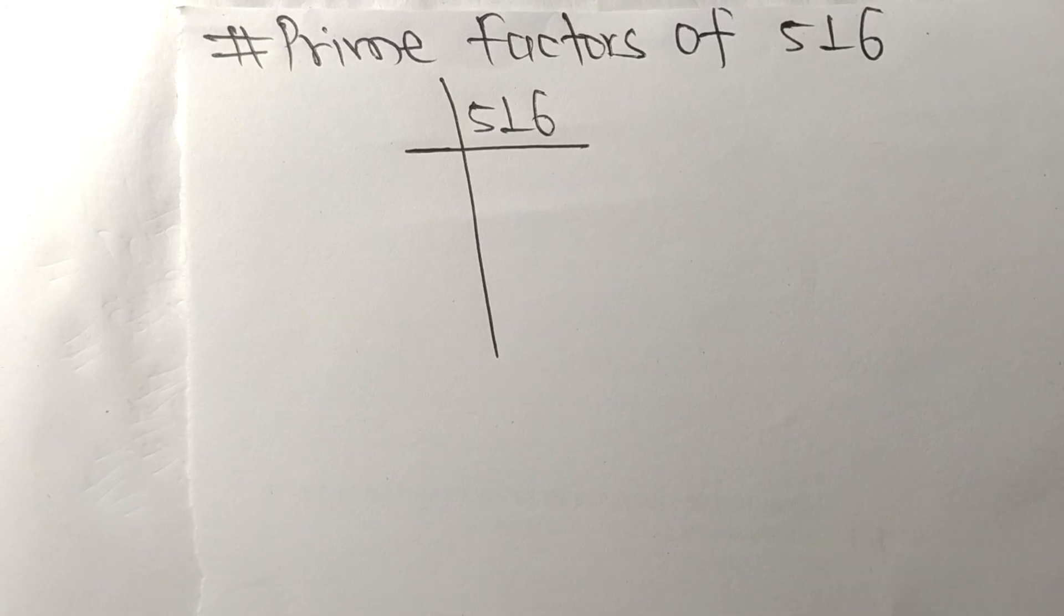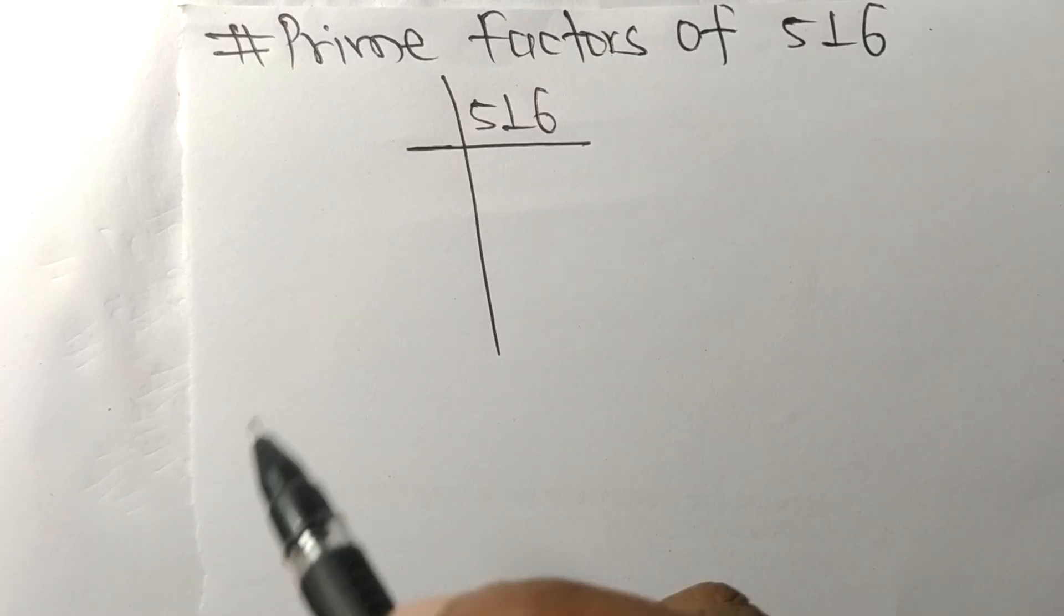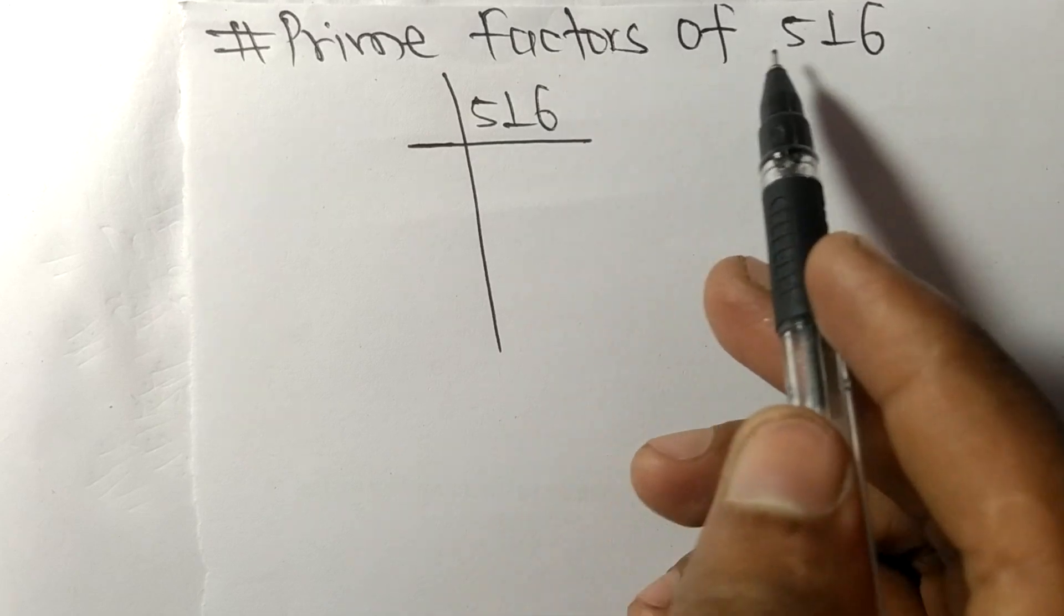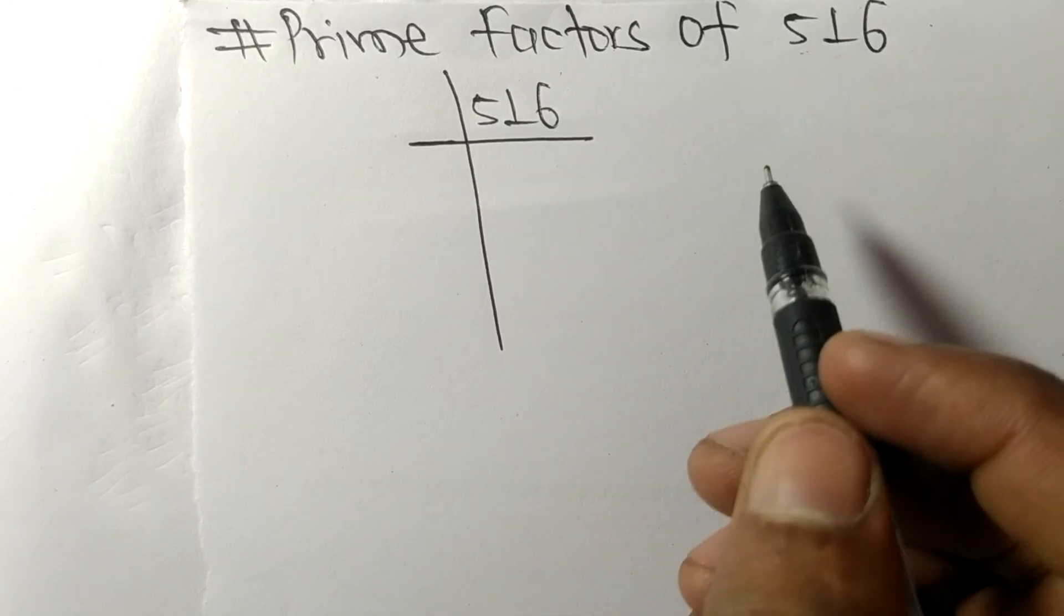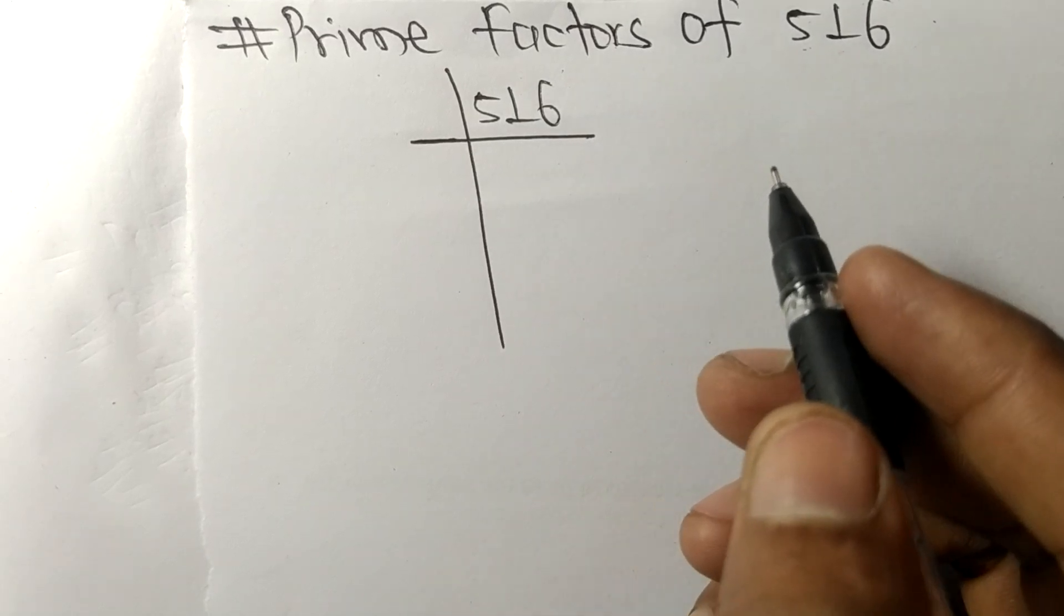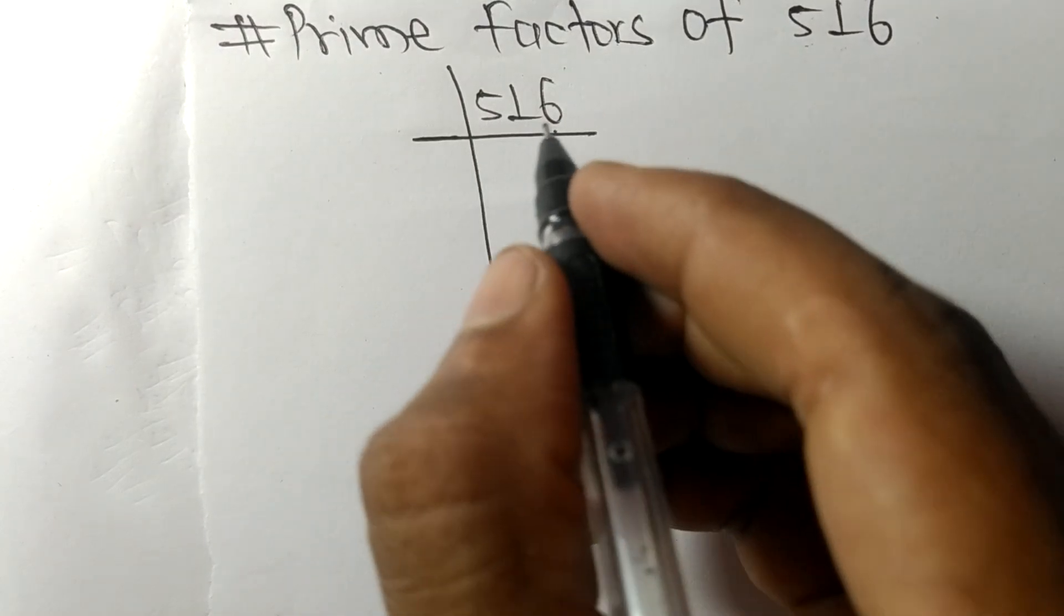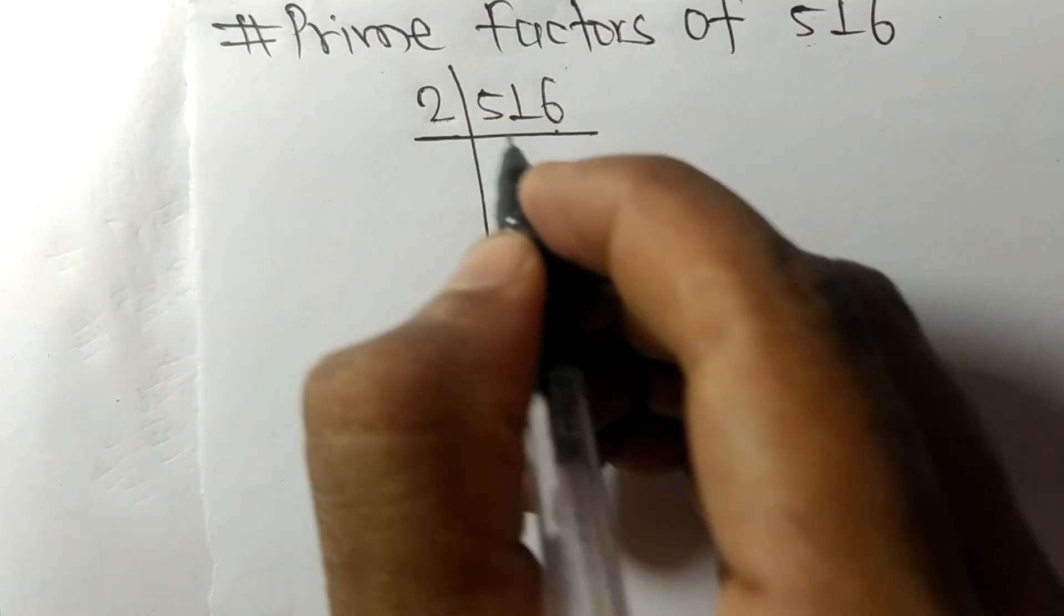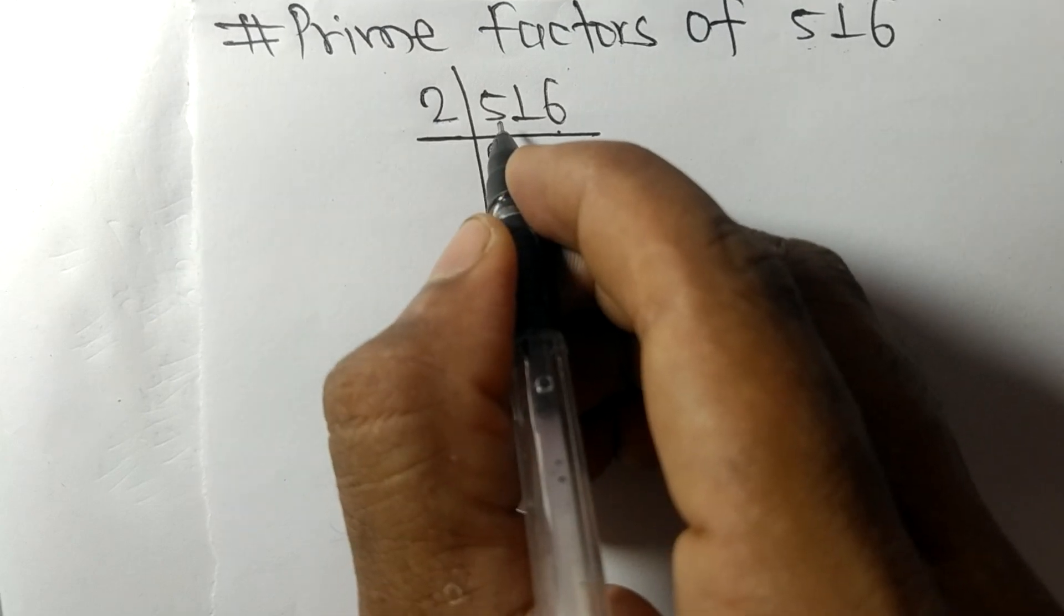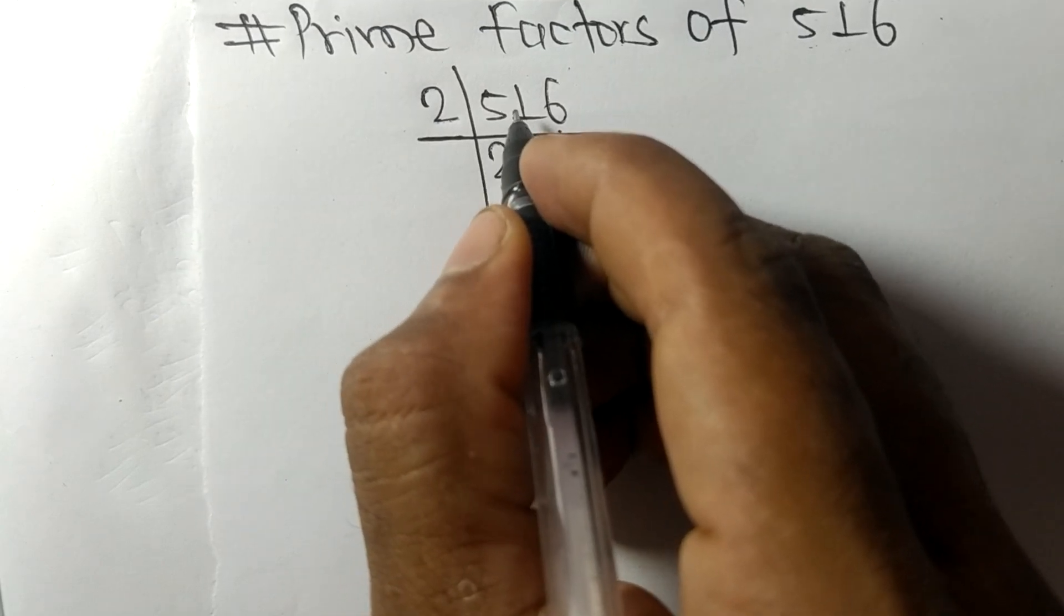Today in this video we shall learn to find the prime factors of 516. At last it contains even number 6, so the whole number is divisible by 2. 2 times 2 means 4, remainder 1.